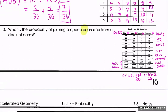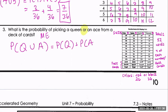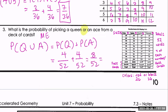What's the probability of picking a queen or an ace from a deck of cards? Highlight the word 'or.' Is it possible when drawing a card for it to be both a queen and an ace at the same time? No — so this is mutually exclusive. The probability of queen or ace equals the probability of queen plus probability of ace: 4/52 + 4/52 = 8/52, which reduces by 4 to give 2/13.